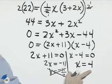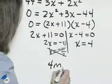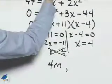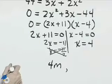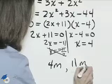That means the height is 4 meters, and the base is 3 plus 2 times 4, or 3 plus 8, which is 11 meters for the base.